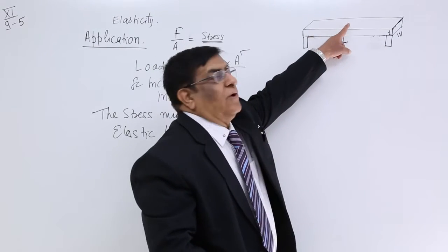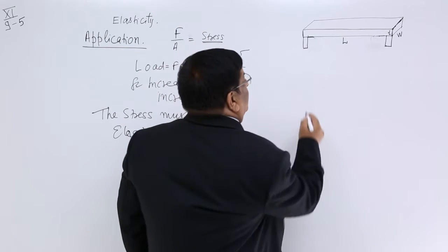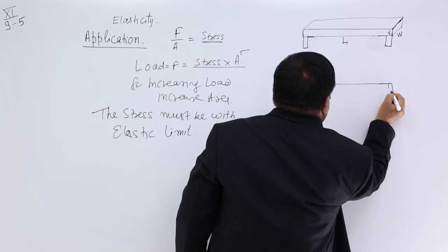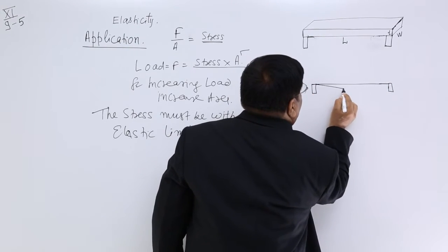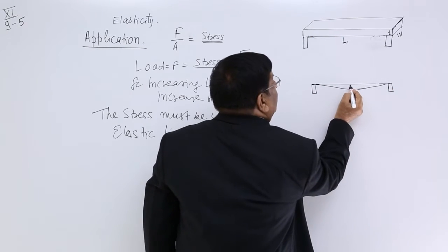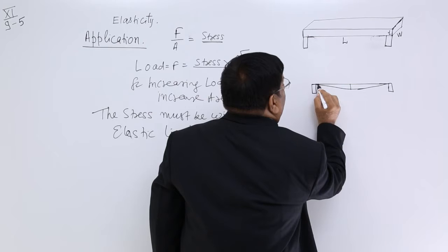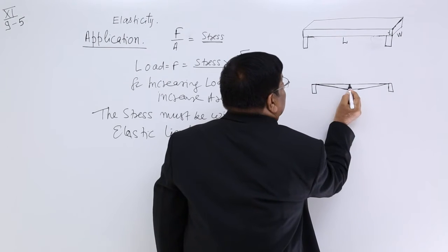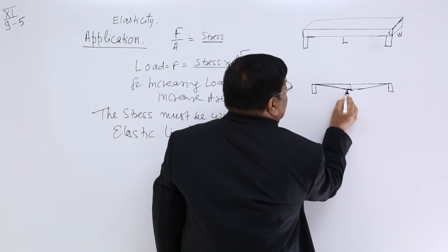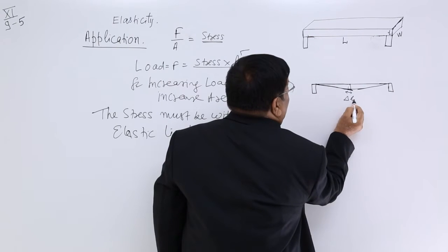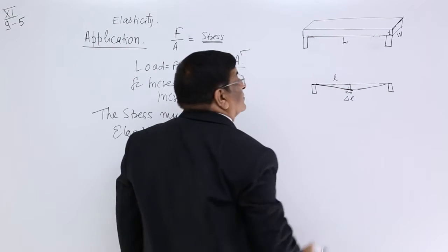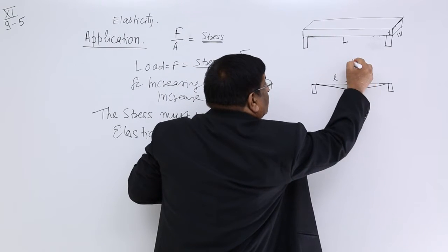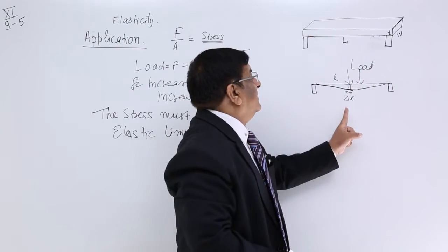When there is a load on this bridge, what will happen? In condition of load, this will become like this. And by the law of geometry, you know, this length and this length are different. This length is more than this length. This is the extension, this much, delta L. This is L. And so whenever there is a load here, what happens with the load? There is an extension.